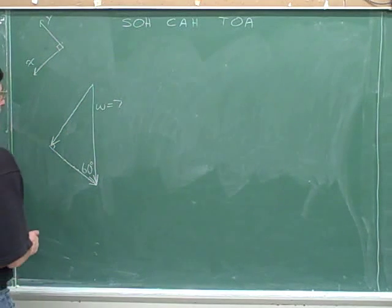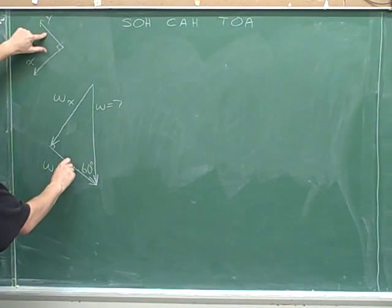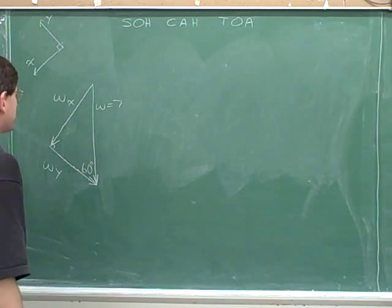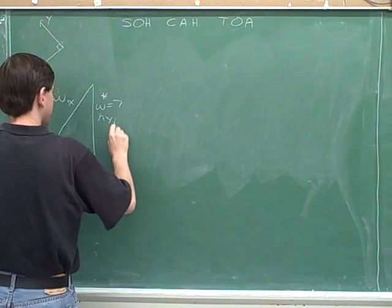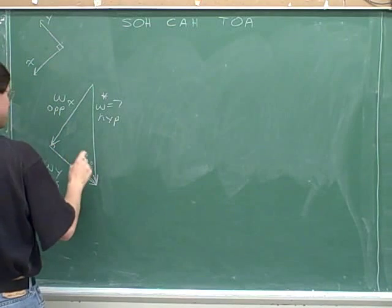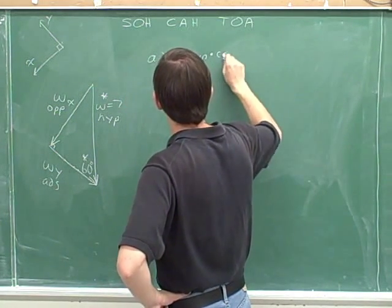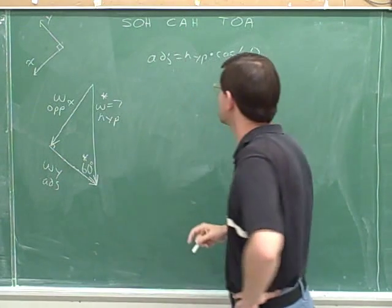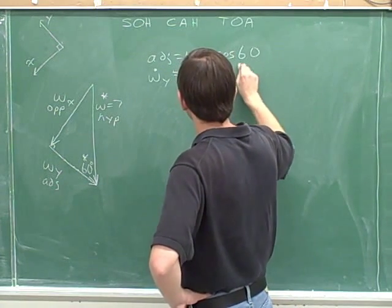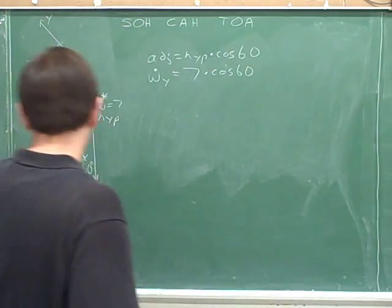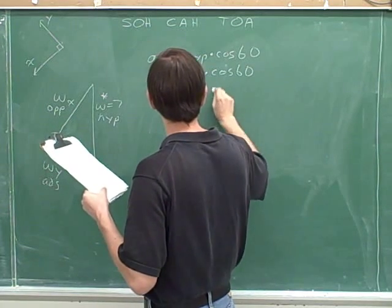We should label our sides: this is W sub x, because this leg is parallel to the x-axis, and this is W sub y, because this leg is parallel to the y-axis. We should also indicate the side we were given and the angle: this side is the hypotenuse, this side is adjacent, and this side is opposite to the 60 degrees. To find the adjacent side, we use cosine. The adjacent side has a length of the magnitude of W sub y, equals the hypotenuse 7 times cosine of 60, which is exactly 3.5.